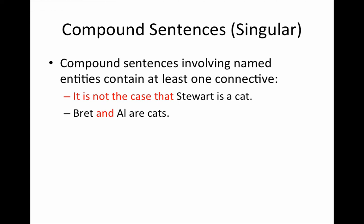The language in red will be replaced by logical notation we'll learn. For example: 'It is not the case that Stewart is a cat.' Here, 'Stewart is a cat' is the atomic sentence of the singular variety — it's singular because it's about Stewart, a named entity. The language in red compounds the sentence because it negates it. Notice that you could eliminate what's in red and still have a sentence. But if you were to eliminate the predicate, you would just have the name 'Stewart,' which is not a sentence, cannot have a truth value, and therefore cannot be a constituent element in an argument.